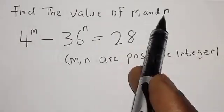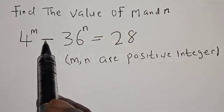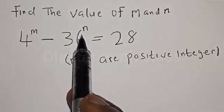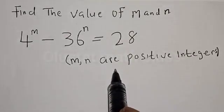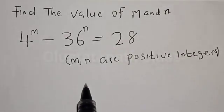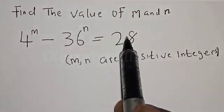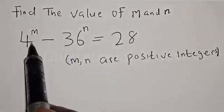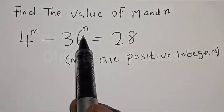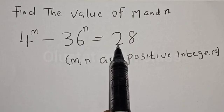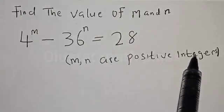Find the value of m and n. We have 4 raised to power m minus 36 raised to power n is equal to 28, where m and n are positive integers. Hi everyone, welcome to my class. In this class we want to find the value of m and n from this given equation, where 4 raised to power m minus 36 raised to power n is equal to 28, where m and n are positive integers.